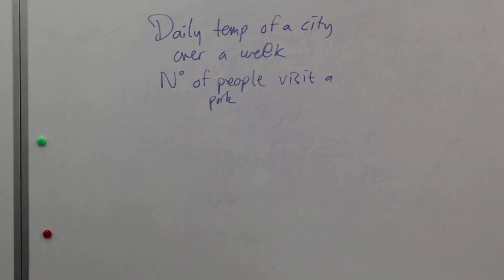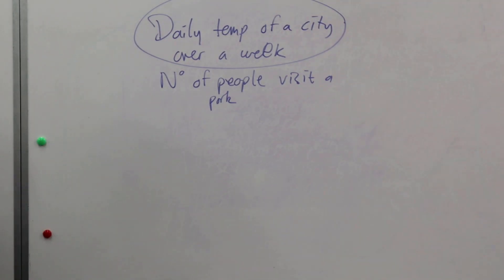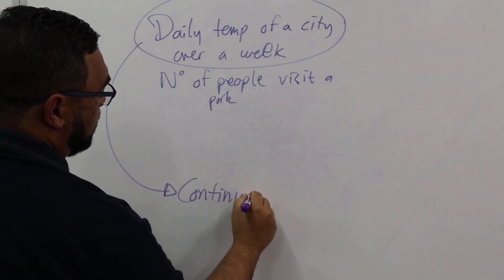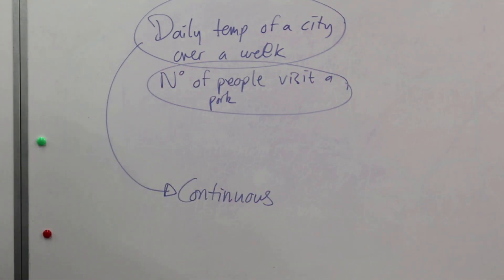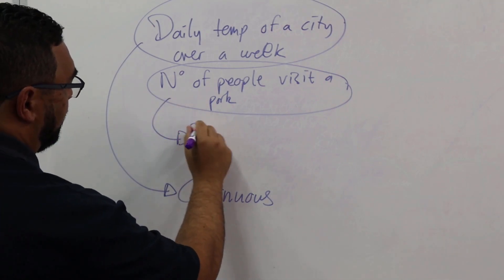Now they ask us which type of data, which data type is temperature, and which is the number of visitors? In other words, is that continuous or discrete? Yes, temperature is continuous, and this one, the number of people that visit a park—can you have 3.25 people visiting a park? No, so that is discrete.